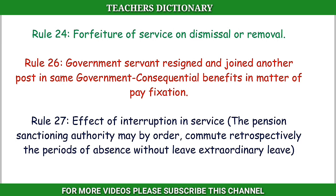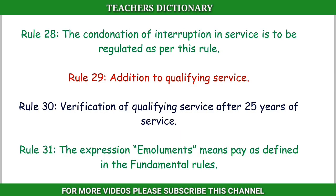Rule 24: Forfeiture of service on dismissal or removal. Rule 26: Government servant resigned and joined another post in the same government — consequential benefits in matter of pay fixation. Rule 27: Effect of interruption in service. Rule 28: The pension sanctioning authority may, by order, commute retrospectively the periods of absence without leave, extraordinary leave. The condemnation of interruption in service is to be regulated as per this rule.